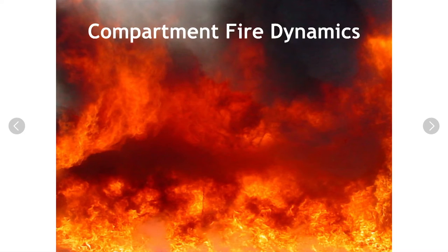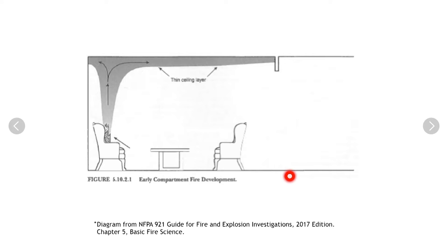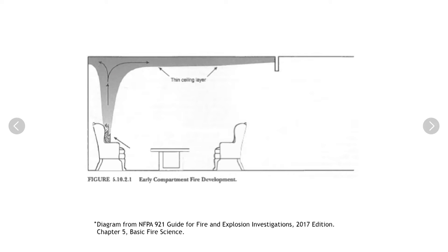There are some compartment fire dynamics that are really important for fire investigators to understand. Looking into NFPA 921, Guide for Fire and Explosion Investigations, we see diagrams depicting early compartment fire development. We have a fire in a chair in a residential-sized room. That fire produces smoke and heat rising in a column above the flames, impacting the ceiling. That column is referred to as a plume. When the plume impacts the ceiling, the smoke and heat spread laterally across the ceiling, generating a layer of smoke and heat at the upper regions of the compartment.